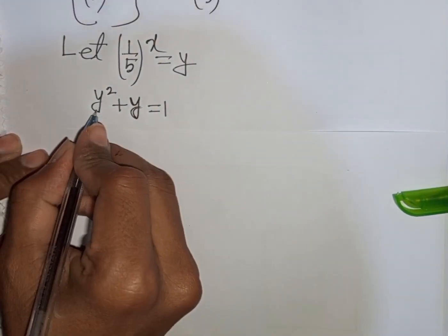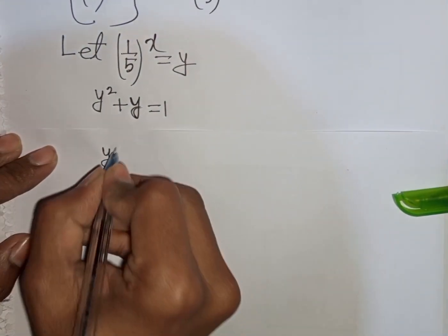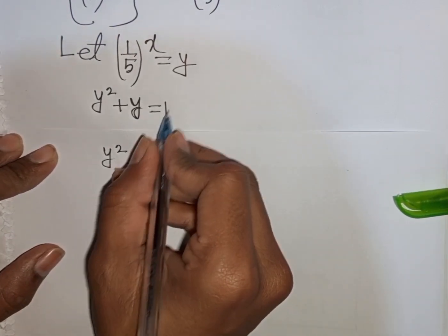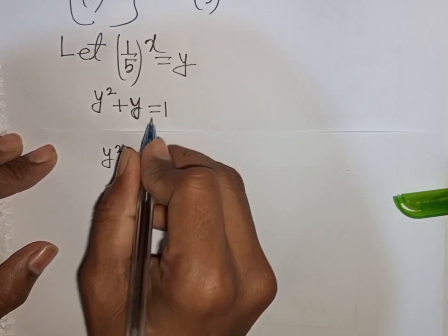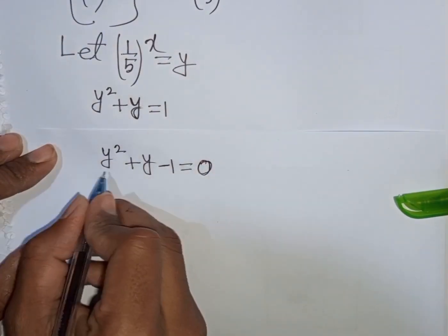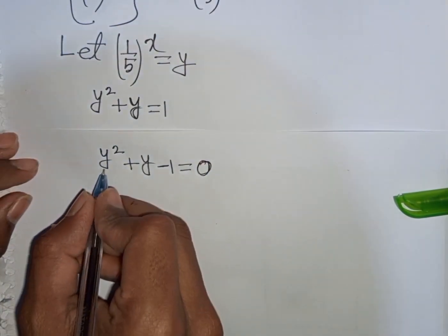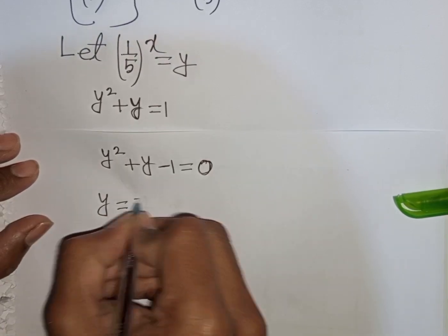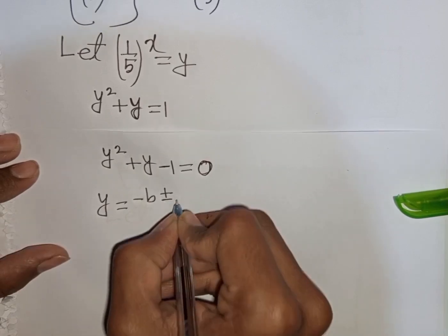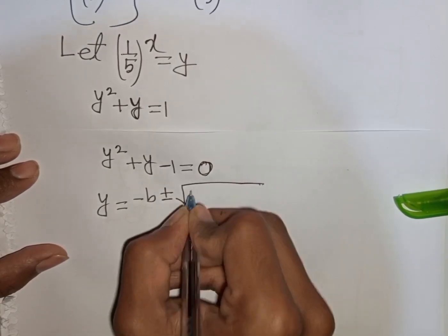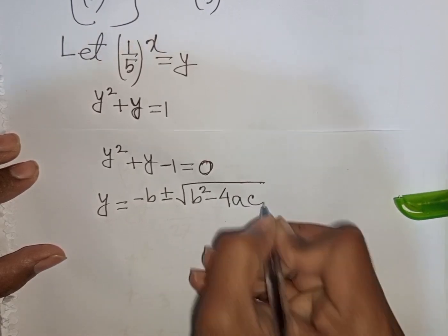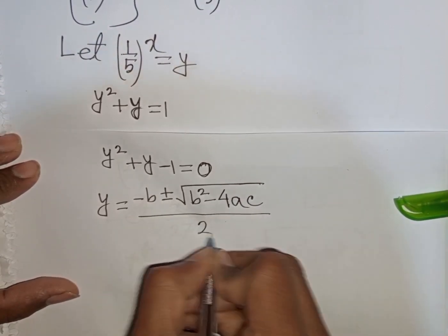Rearranging, we write y squared plus y minus 1 equals 0. We apply the quadratic formula: y equals minus b plus or minus square root of b squared minus 4ac, all divided by 2a.